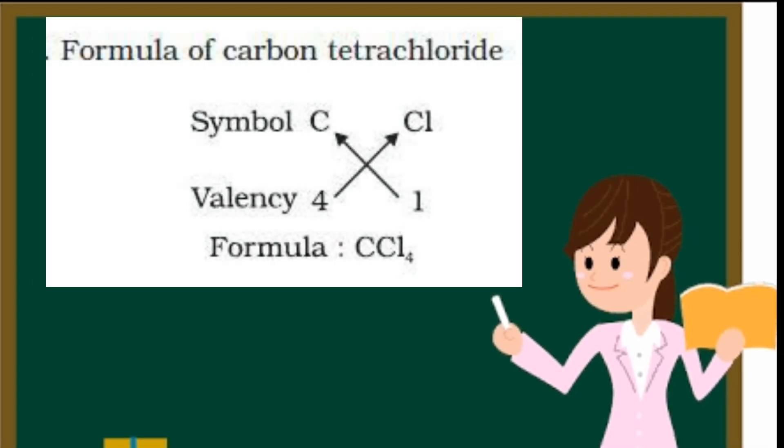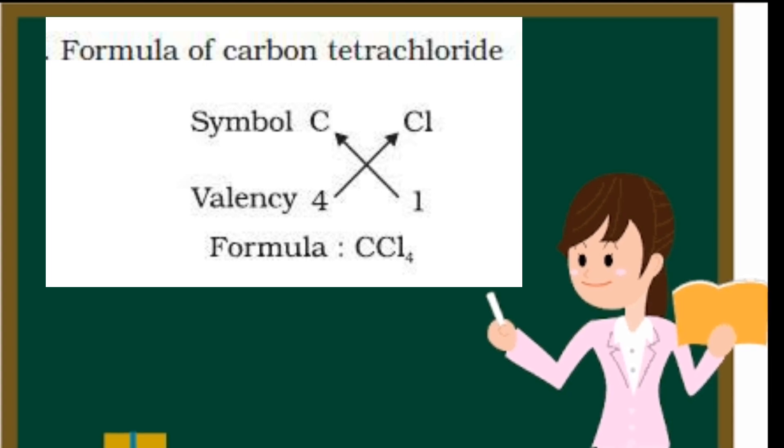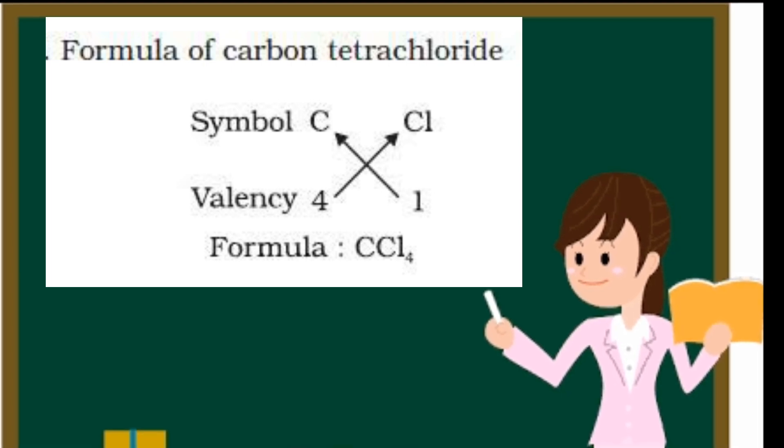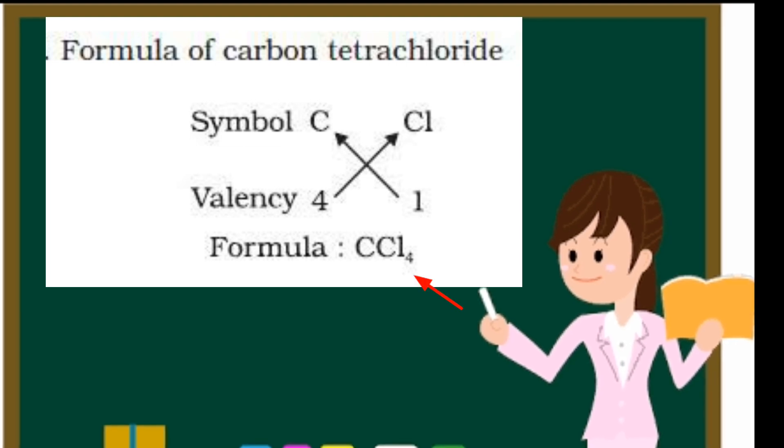Next, carbon tetrachloride. Same here, carbon has valency 4, chlorine has valency 1. Just by cross multiplication we are having the formula as CCl4.